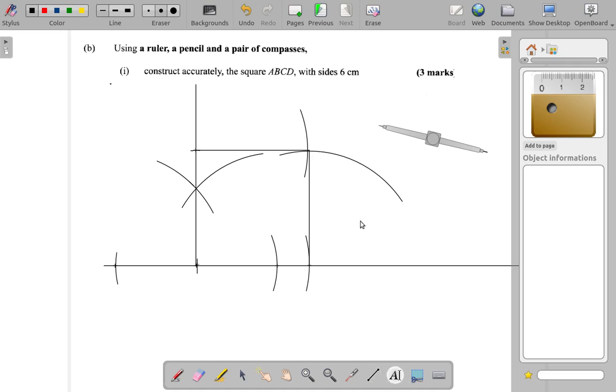Let me label the sides. Let me put A here, B, C, and D right here. Good. So now I have my square ABCD. That's my square for three marks.